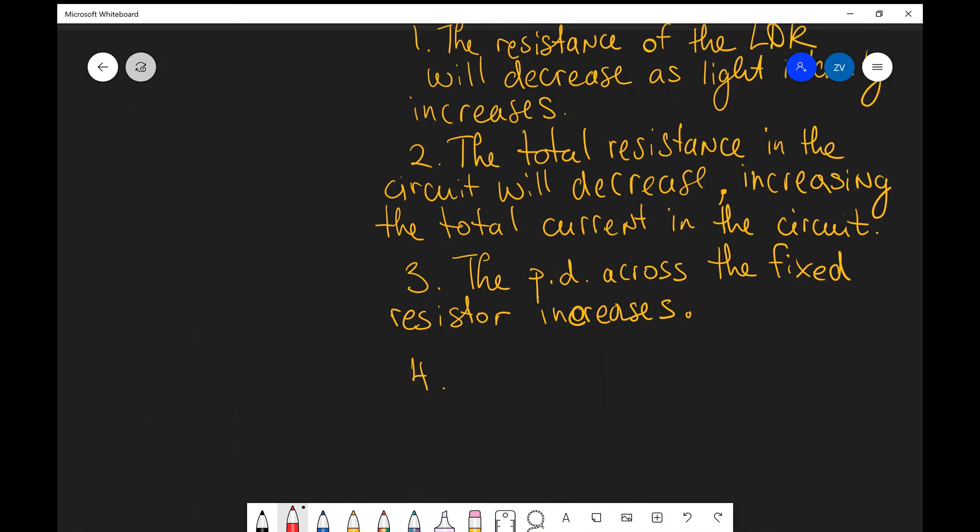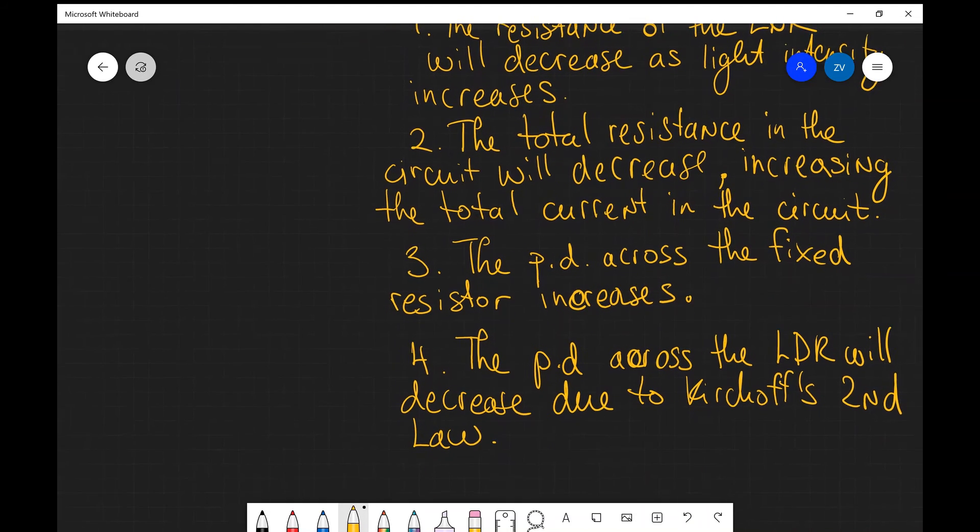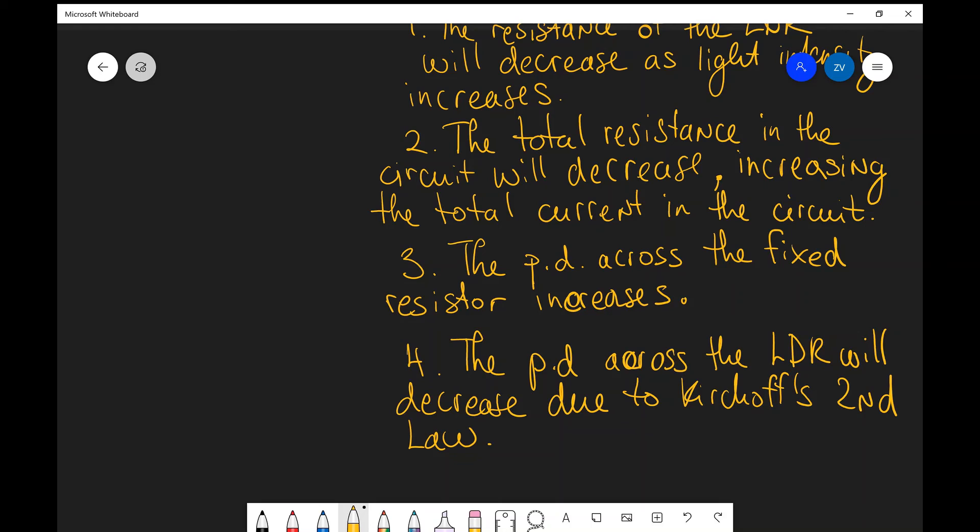Well, let's write this up. So the PD across the LDR, the PD across the LDR will decrease due to Kirchhoff's second law. And that was the need to take the appropriate share out of the total EMF.